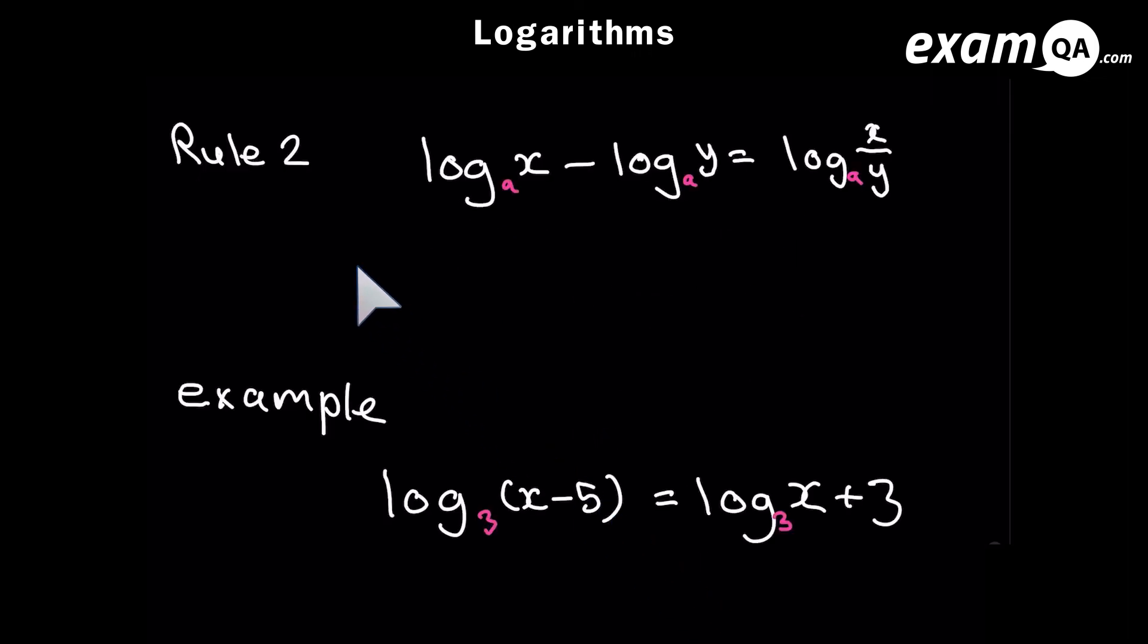So let's now look at the next rule. And it's very similar to the addition one except it's got a minus. So when it was add, we ended up timesing them. And now that it's subtract, we're going to divide them. So log base a, x, minus log base a, y, equates to log base a, x over y.